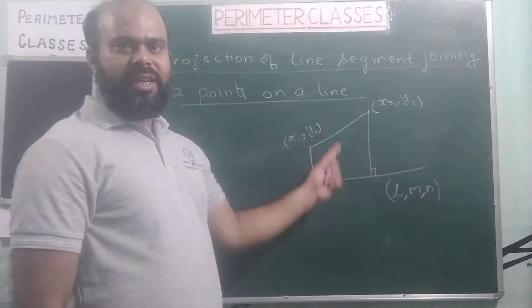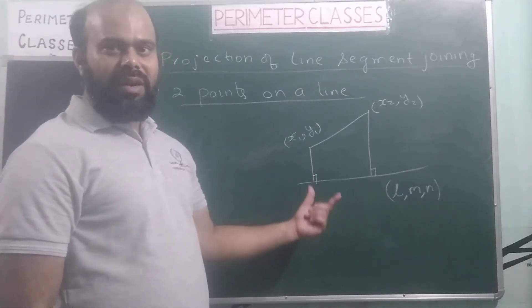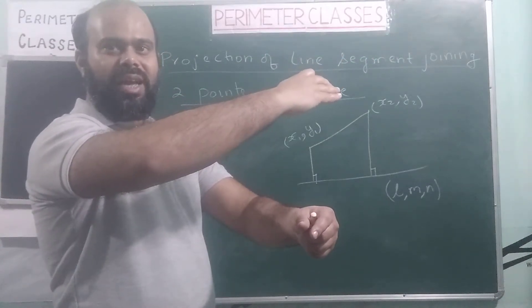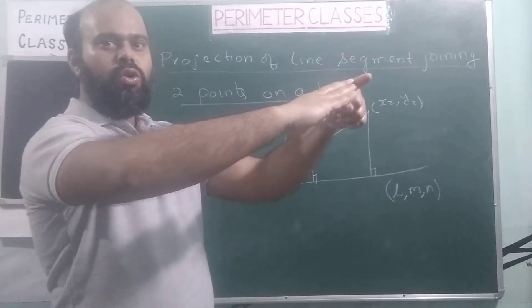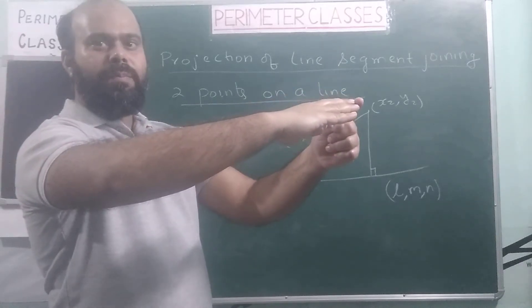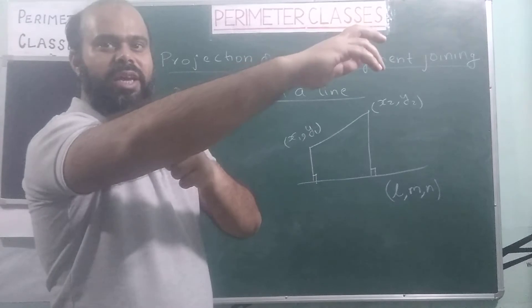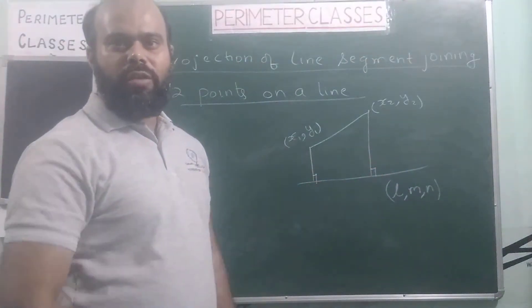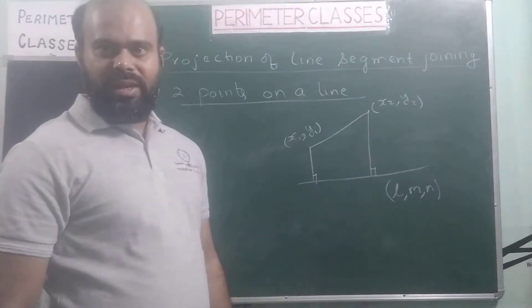It is not necessary that these two are in the same plane — they may be in different planes — but still we can find the projection. If this is a line segment and there is a line, we drop a perpendicular from one endpoint on this line and from the other endpoint on this line. The small portion between those feet of perpendiculars will be the projection of this line segment on that line. So, let us find that length.